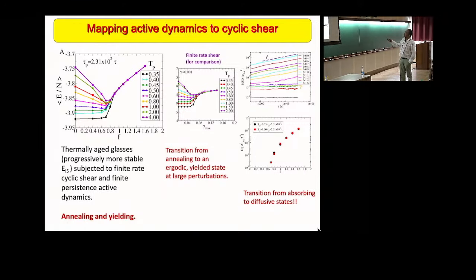If one looks at the mean squared displacement for these different cases, this is now for one particular sample, but as a function of the amplitude of the active force, one again finds this discontinuous change from a non-diffusive to a diffusive state. So the aspects of annealing and yielding, as well as the transition from absorbing to diffusive states, in this case are essentially the same as the case of cyclic shear yielding.